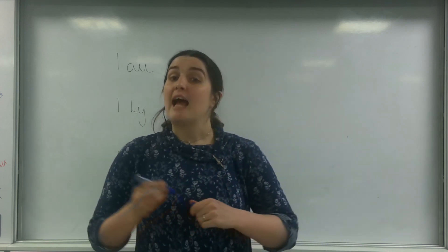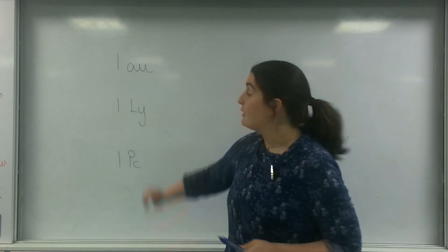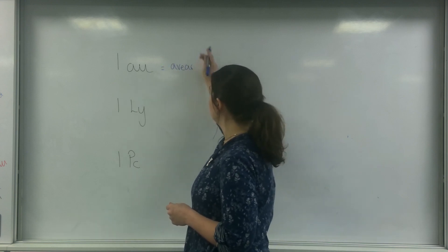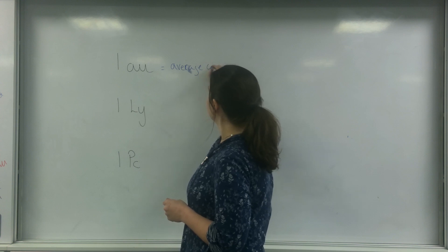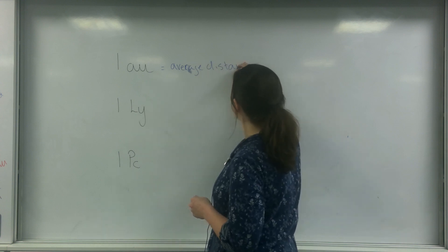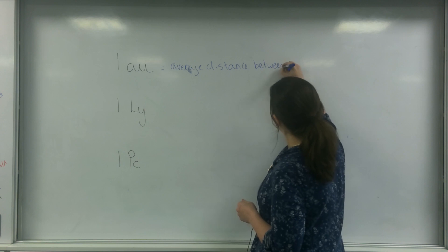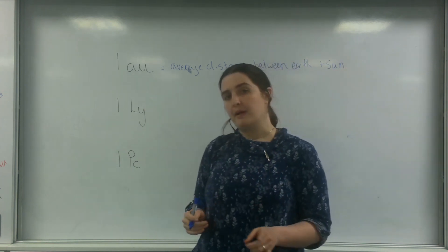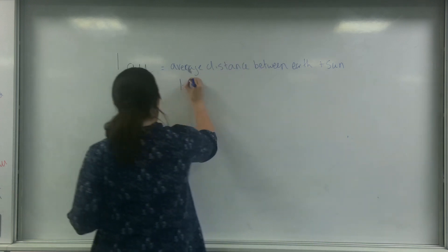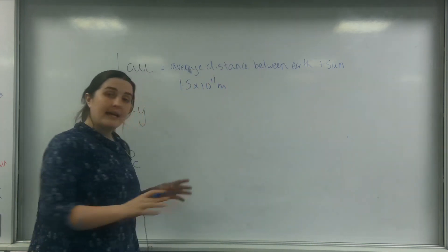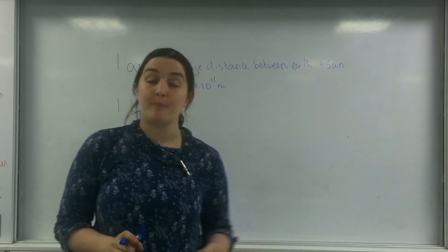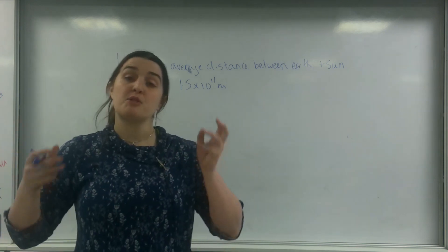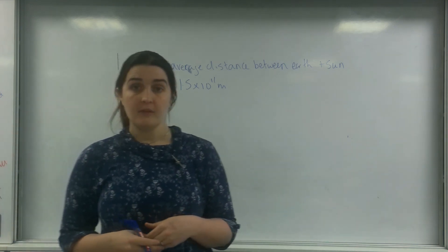An astronomical unit, also known as an AU, is the average distance between the Earth and the Sun. That number is approximately 1.5 times 10 to the 11 metres. You may have seen this if you've watched any of my playlists for the gravitational field - I use that number a lot.